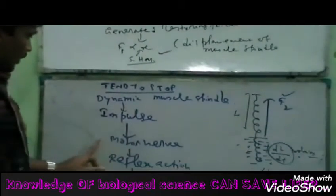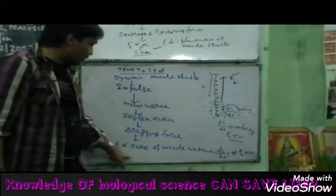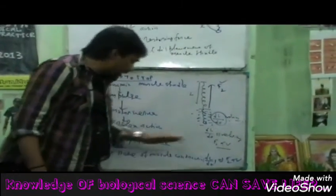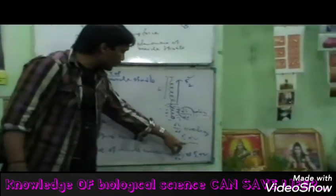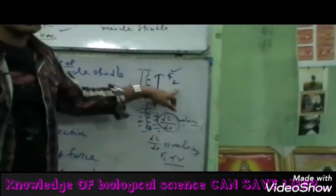That is the dynamic muscle spindle: impulse, motor nerve, reflex action, dragging force. This is F2, the rate of muscle contraction. This is F2, the DL by DT, proportional. F2 is the V, the DL by DT.